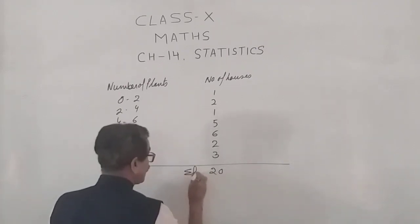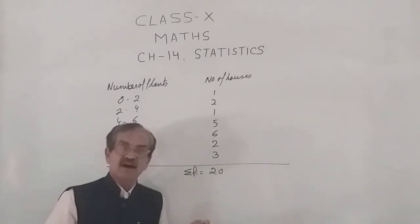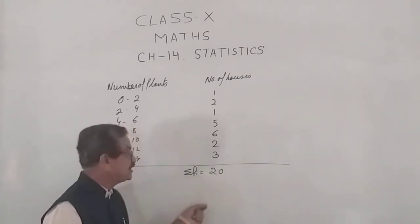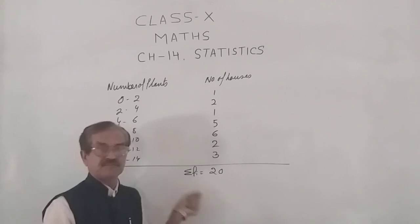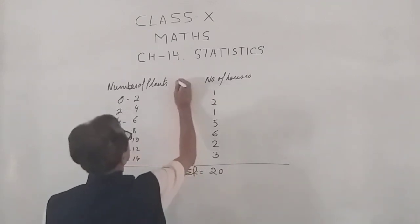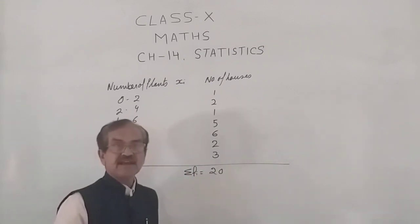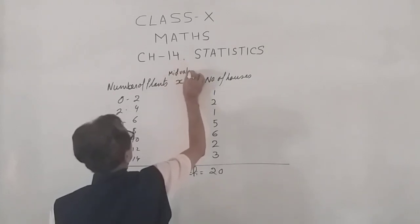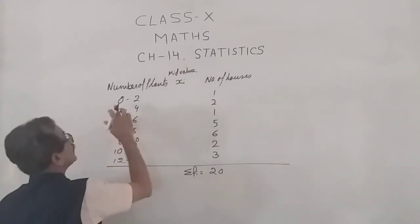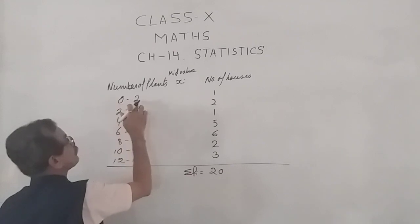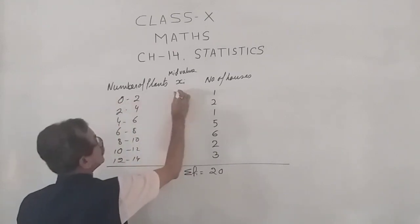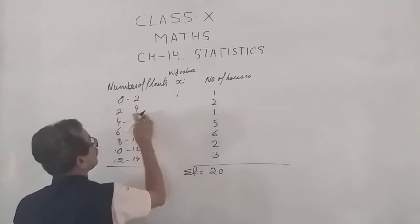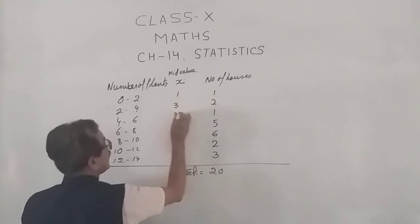Now here we are going to find xi. Xi is the class marks or the mid-value: lower limit plus upper limit upon 2, and so on.